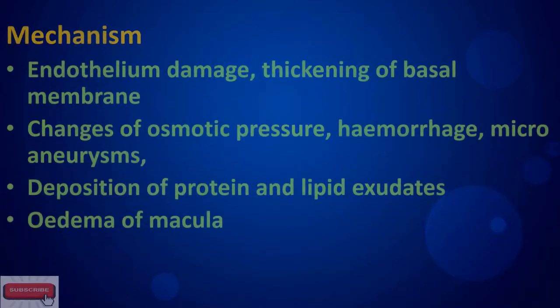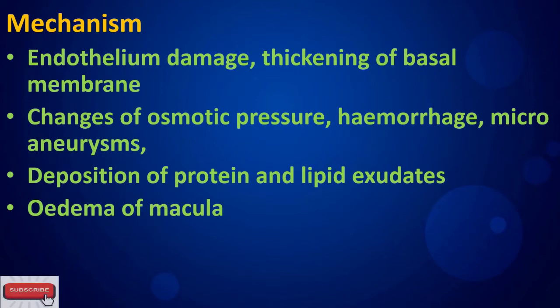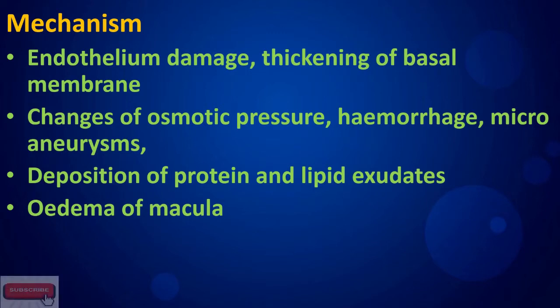The mechanism of diabetic retinopathy includes endothelial damage, thickening of the basal membrane, changes in osmotic pressure, hemorrhage, macroaneurysms, deposition of protein and lipid exudates, and oedema of the macula.